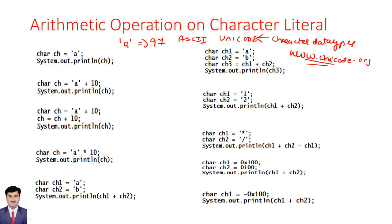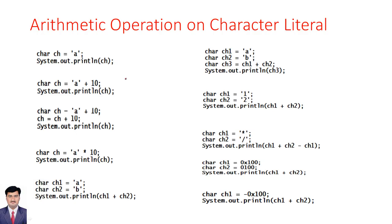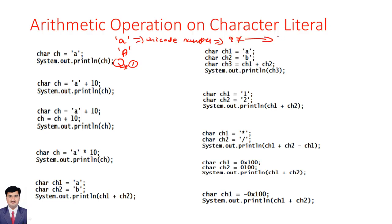We will see some arithmetic operations that we can do on character data types. When we say single quote 'A', single quote capital 'A', or single quote '*', all these are characters — whatever we represent within single quotes becomes a character. Internally it is represented by a Unicode number, basically 97. We can even assign integer constants to character data types.